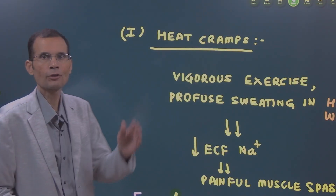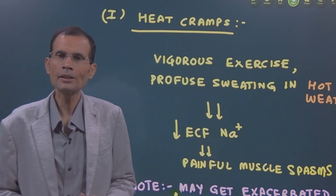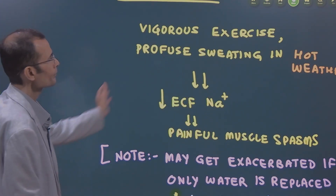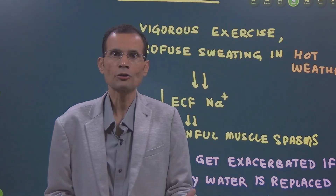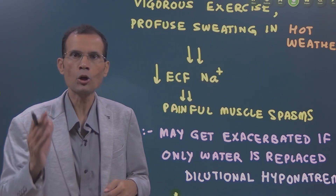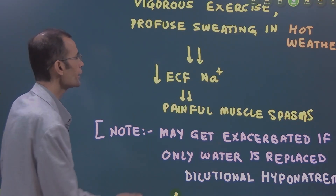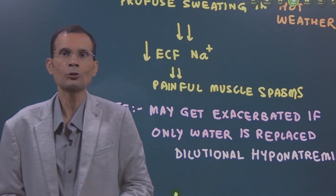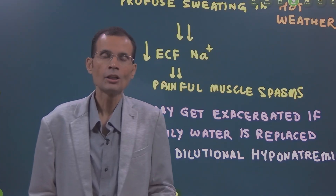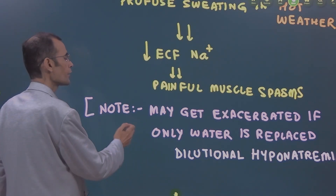Now let us look at heat illnesses from the milder to the severe forms. The mild form is heat cramps, which most of us have experienced at some point. During vigorous exercise with profuse sweating in hot weather, there is a decrease in ECF sodium. Excessive sweat loss causes loss of sodium chloride, leading to decreased ECF sodium. This disturbance in electrolyte balance is said to be the cause of painful muscle spasms — that is heat cramps.